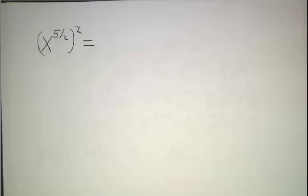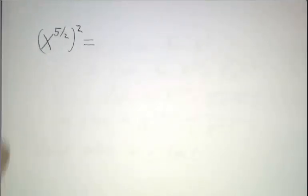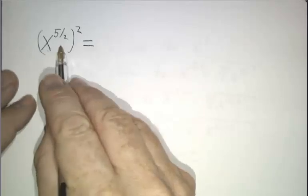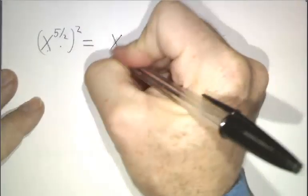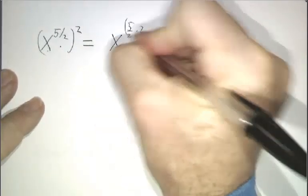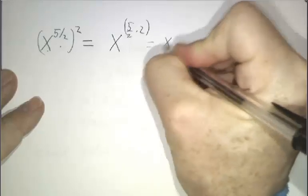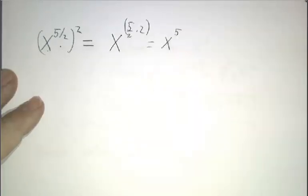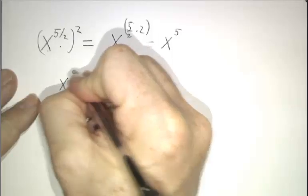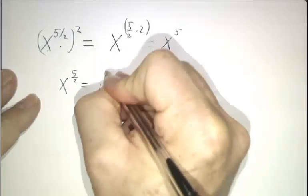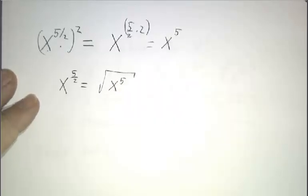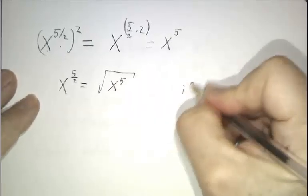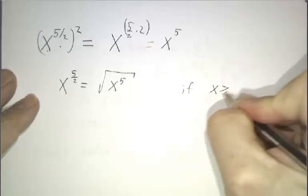Then we have fractional powers. Now to understand fractional powers, we use another of our laws of exponents. If you want to understand x to the 5 halves, let's see what x to the 5 halves squared is. So this is x to the 5 halves times 2, and that's x to the 5th. So you must have x to the 5 halves must be the square root of x to the 5th.